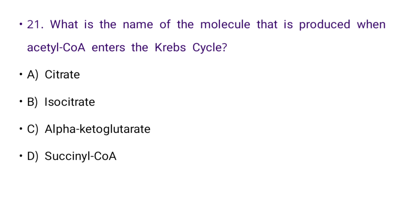Next: What is the name of the molecule that is produced when acetyl coenzyme A enters the Krebs cycle? Options: citrate, isocitrate, alpha-ketoglutarate, or succinyl CoA. The right answer is A: citrate.